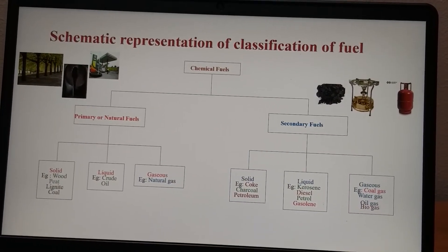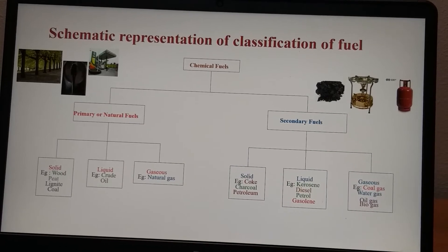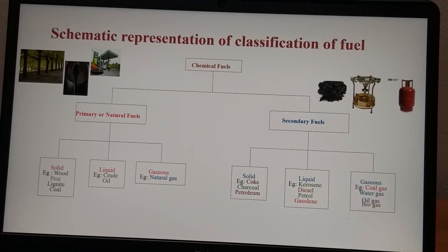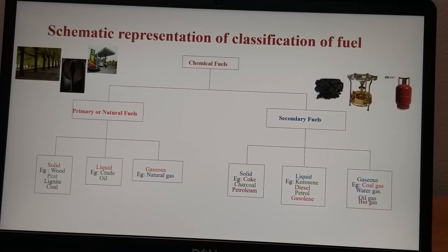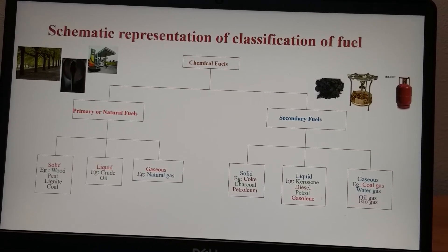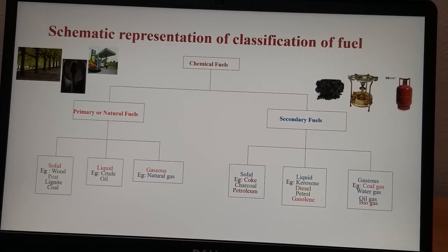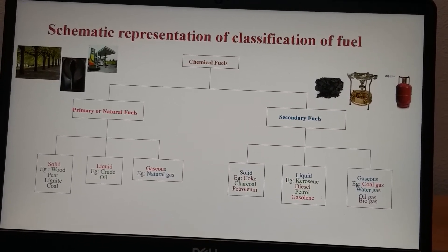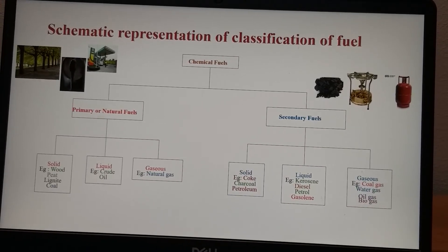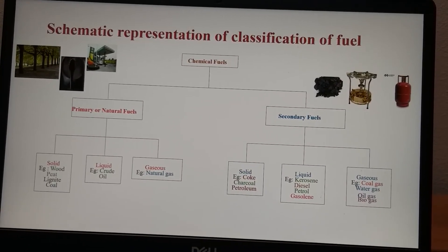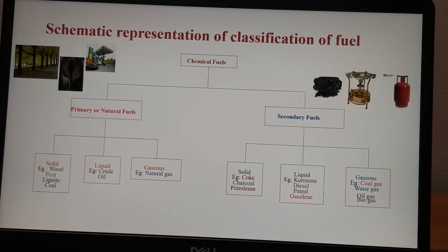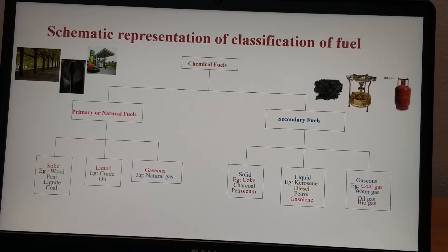Here is the schematic representation of the classification of fuels, with figures also provided for clarification so that you can understand it properly. The primary or natural fuels are trees, from which we get wood, crude oil and CNG. The secondary fuels are coke, LPG and kerosene oil. Many examples have been included for better understanding.